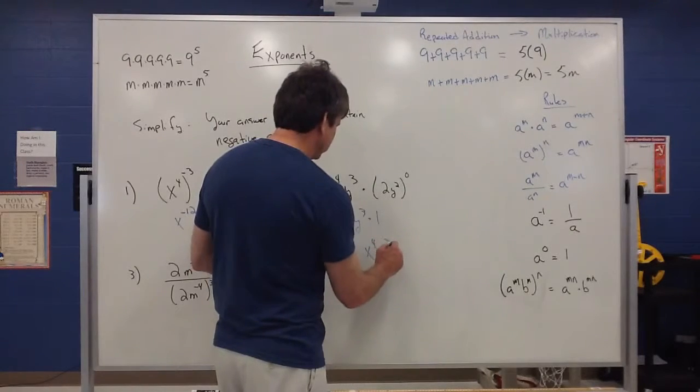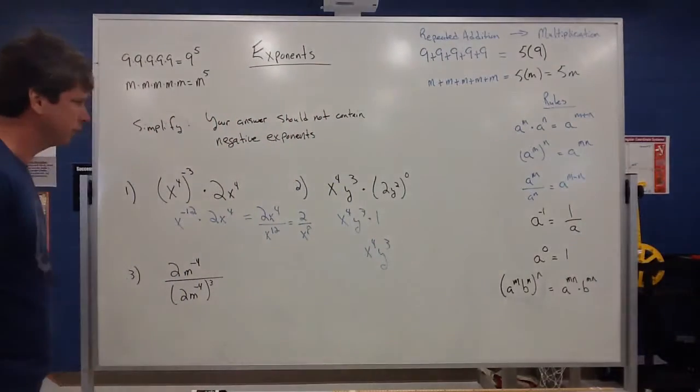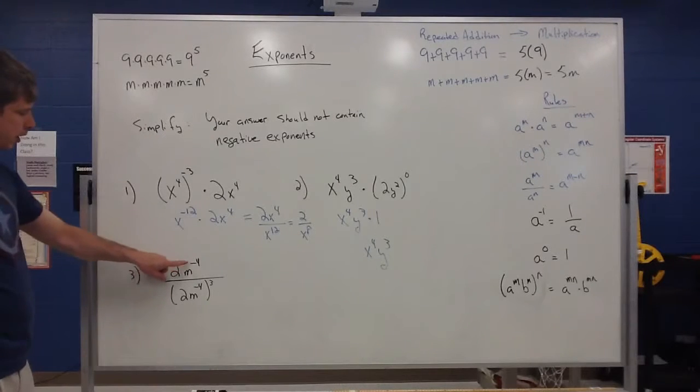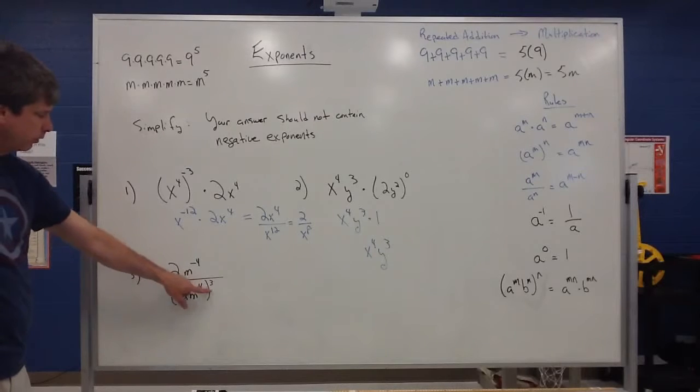So I have x to the fourth times then y to the third that's my simplified answer. My next example I have 2m to the negative fourth and then I have this 2m to negative fourth raised to the third power.